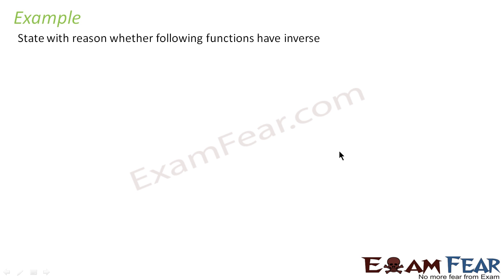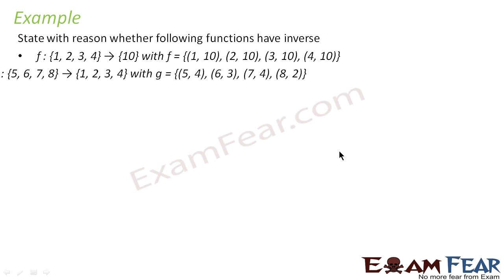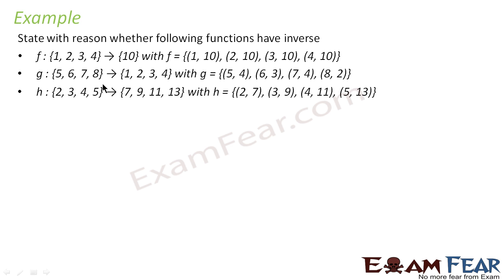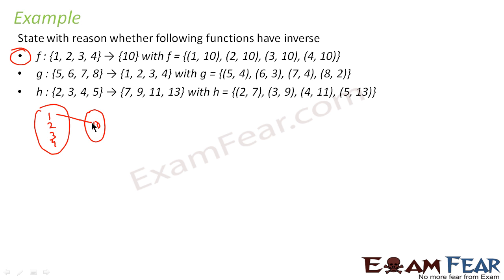We have to tell whether the function is invertible or not. We have three functions f, g, and h. For the first part, f maps 1, 2, 3, 4 — all of them go to 10. So f(1)=10, f(2)=10, f(3)=10, f(4)=10. This function is not one-to-one because all these values are pointing to 10. Since it is not one-to-one, it is not invertible.